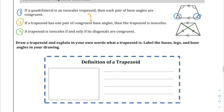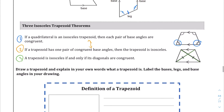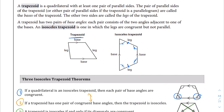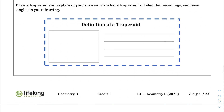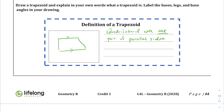Draw a trapezoid and explain in your own words what a trapezoid is. It doesn't have to be an isosceles trapezoid. The basic definition of a trapezoid is that you have one pair of parallel sides. It's a quadrilateral with one pair of parallel sides. Notice it's different from an isosceles trapezoid — we just need one pair of parallel sides, and they can be different lengths.